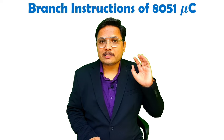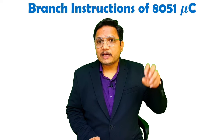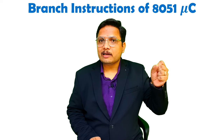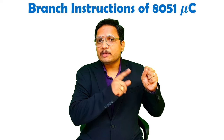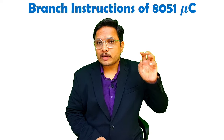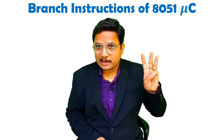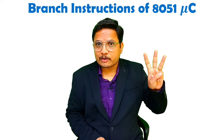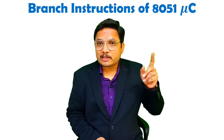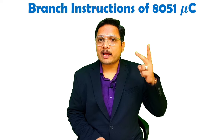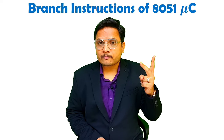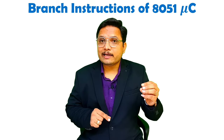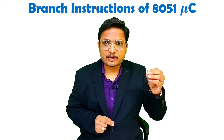Let me explain Unconditional Branch Instructions first. Unconditional Branch Instructions means that without any condition, it will jump to the location specified by the label. In Unconditional Branch, you have three categories: Short Jump, Absolute Jump, and Long Jump. For Conditional Branch Instructions, there are also two categories: Normal Conditional Branch Instructions and Bitwise Conditional Branch Instructions.